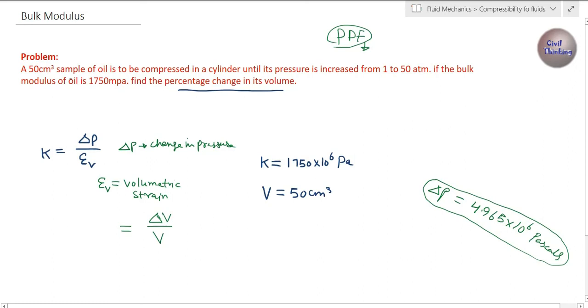This 50 cm³ sample of oil is compressed, so this is going to be negative here. Negative sign indicates compression.